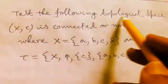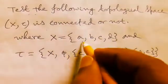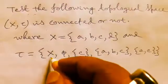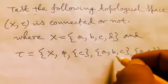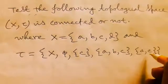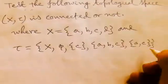Test the following topological space (X, τ) is connected or not, where X is given by {a, b, c, d} and τ = {X, φ, {c}, {a,b,c}, {a,c}}. We assume all members are basic open sets.